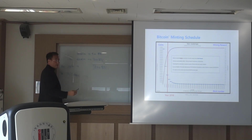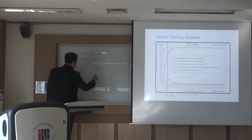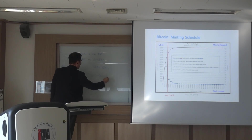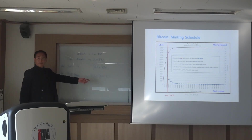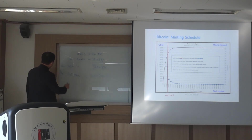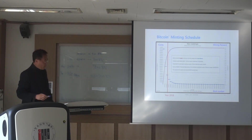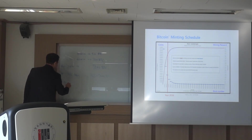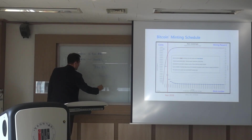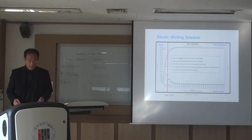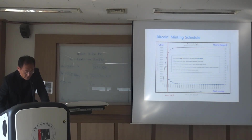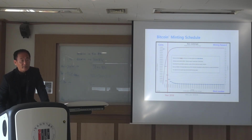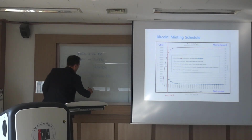How many Bitcoin created in a year? And then there is a four-year period. Four times that number gives us 210,000. That is this block number.